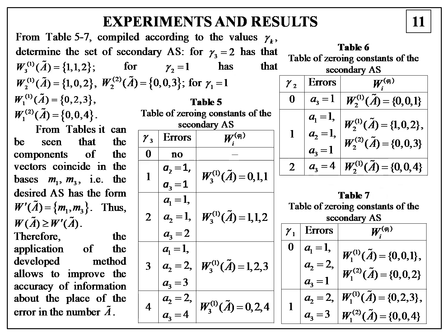From tables 5, 6, and 7 compiled according to the values of the zeroing constants, determine the set of secondary alternative sets. It is convenient to implement the choice of common modular number system bases in the form of tables. From the tables, it can be seen that the components of the vectors coincide at bases M1 and M3. The desired alternative set has the form presented on this slide.